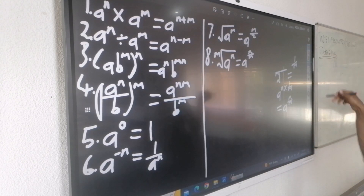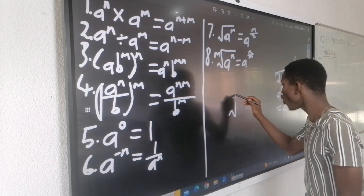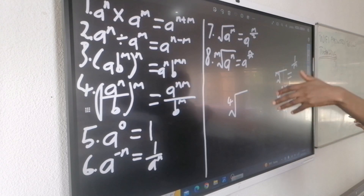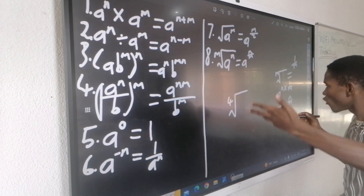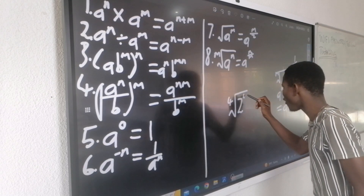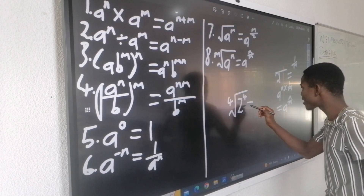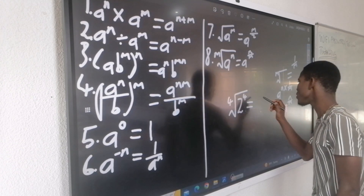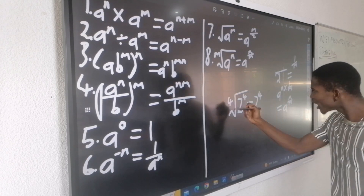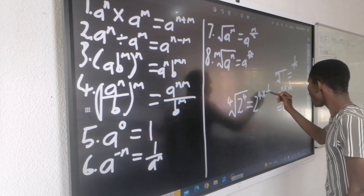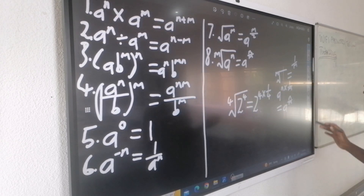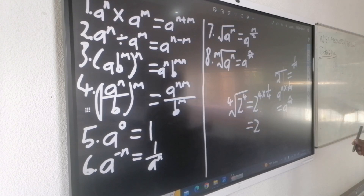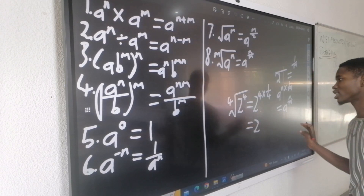Let us try that with the same example from law 7. We have the fourth root of 2 to the power 4. We count roots according to the number — third root, fourth root, up to infinity. Fourth root means the index is 4, so it equals 1 over 4. I multiply 4 by 1 over 4, which gives 1. Remember, according to mathematics, you are not allowed to write an exponent of 1 — it is always there but invisible. So my answer is simply 2.